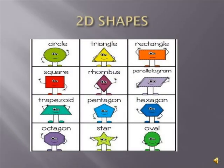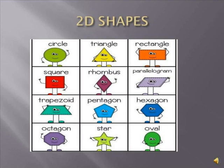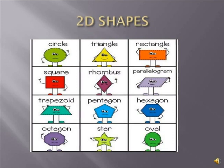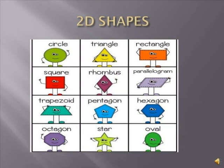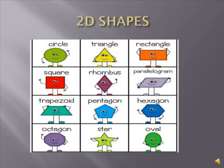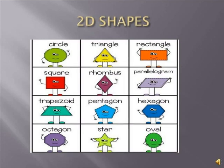Some common examples of 2D shapes are circle, triangle, rectangle, square, rhombus, parallelogram, trapezoid, pentagon, hexagon, octagon, star, and oval. Remember, you can't hold these shapes in your hand because they are two-dimensional shapes. You can just only draw them on paper.